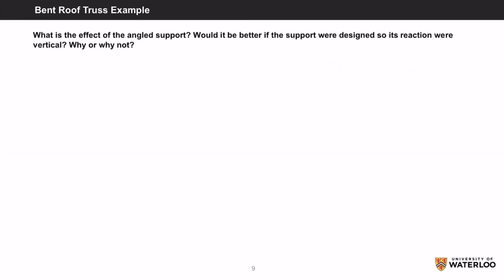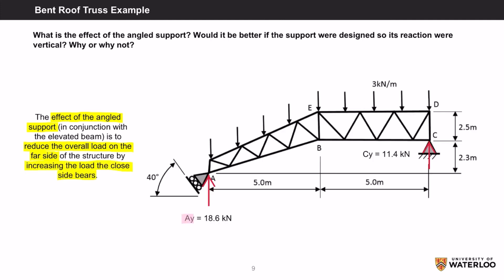What is the effect of the angled support? Would it be better if the support were designed so its reactions were vertical? Why or why not? So the effect of the angled support in conjunction with the elevated beam is to reduce the overall load on the far side of the structure by increasing the load that the close side bears. So A took more of the load of the structure than C since A is angled.